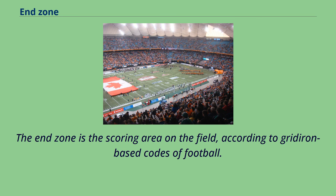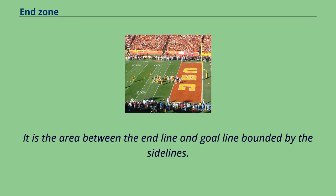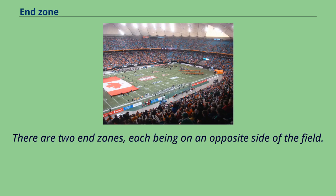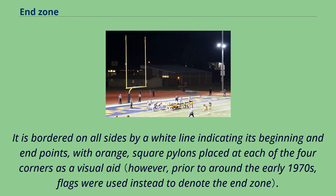It is the area between the end line and goal line bounded by the sidelines. There are two end zones, each being on an opposite side of the field. It is bordered on all sides by a white line indicating its beginning and end points, with orange square pylons placed at each of the four corners as a visual aid.